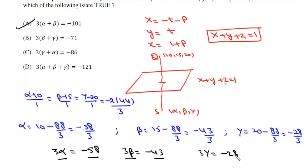Now for γ and α, -58 plus -28 is -86. Option C is correct. And if we add all these three, -58 + -43 + -28 is -129, that means option D is incorrect. So the correct options are A, B and C.